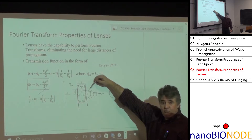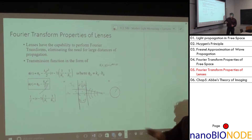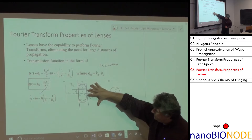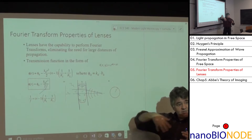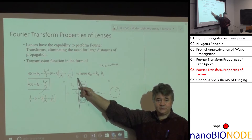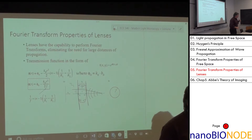That curved wavefront is why a lens focuses light to a point: in time-reversal, a curved wavefront converging toward a point is equivalent to a point source emitting a spherical wave. The outer regions travel faster, curving the plane wave so all the light converges at the focal point.